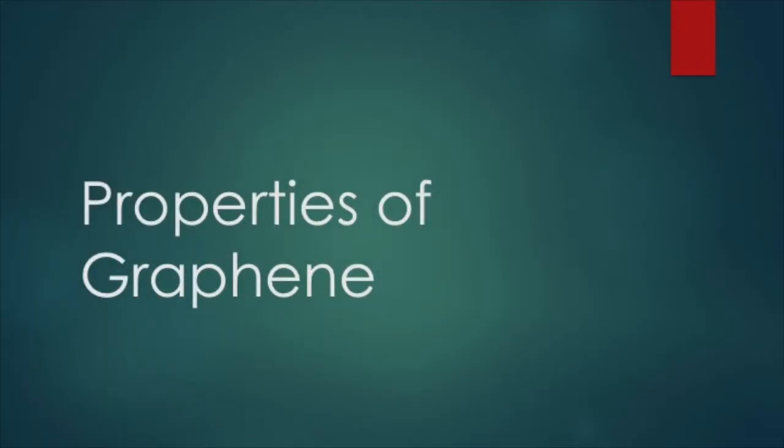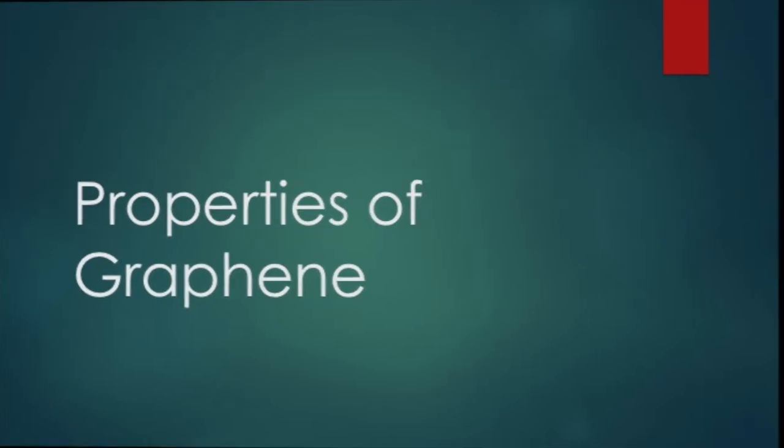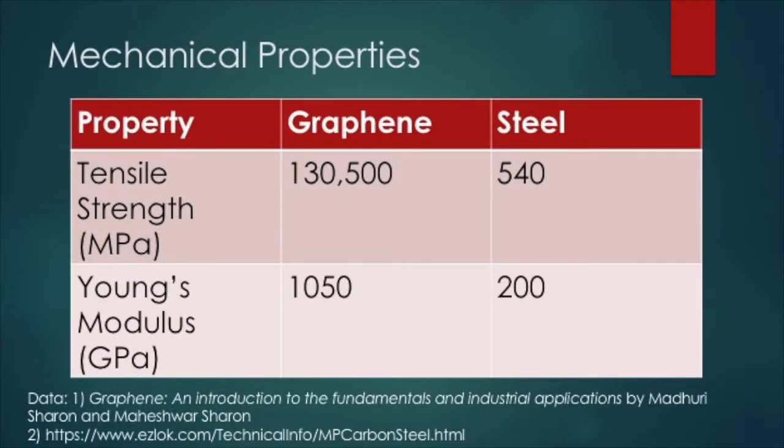I will now briefly discuss the unique properties of graphene that make it so widely utilized in a variety of applications across many different scientific fields. Firstly, graphene is arguably the strongest material ever discovered, with a tensile strength of 130,000 megapascals, and a Young's modulus of 1,050 gigapascals.